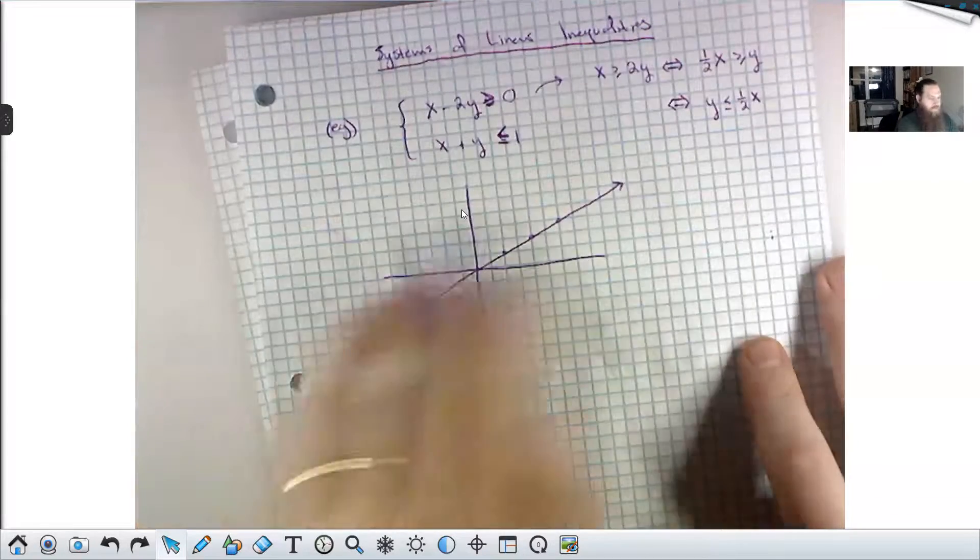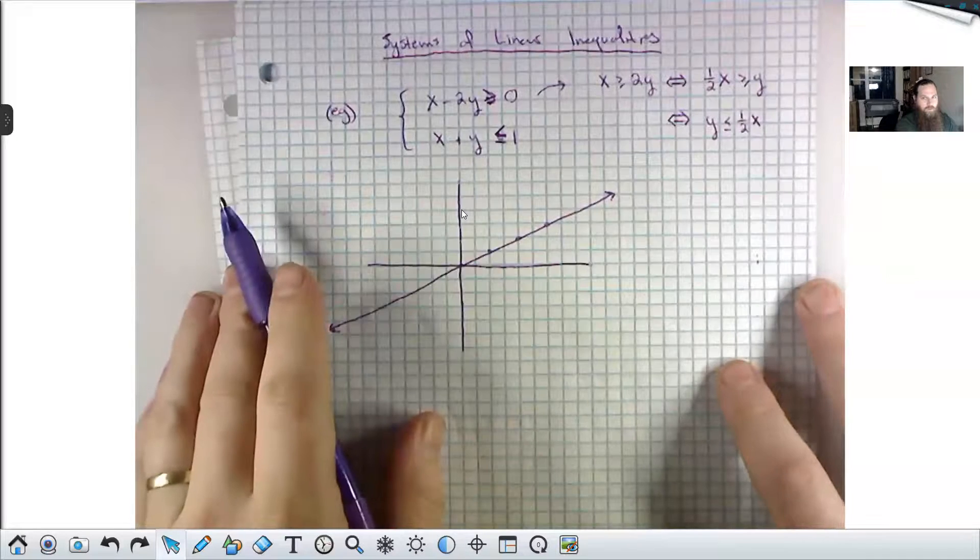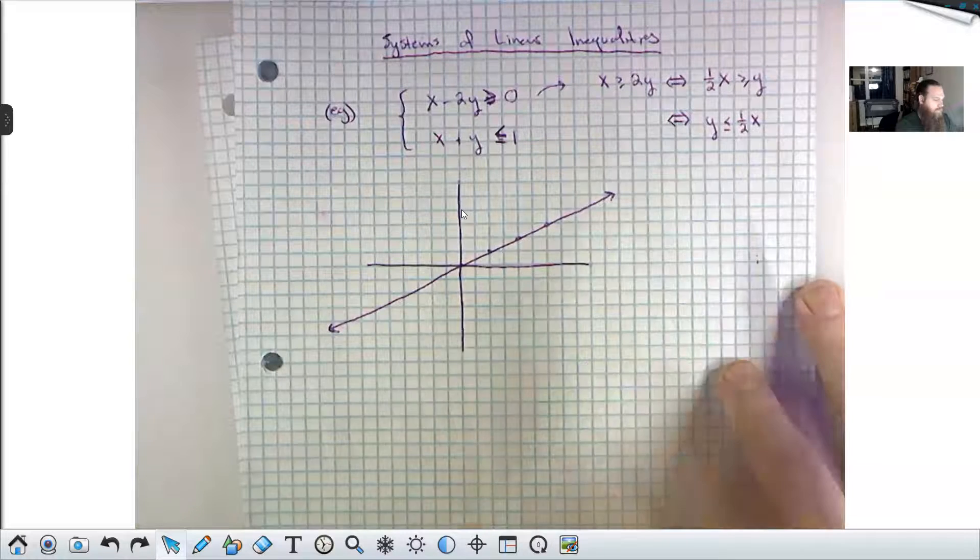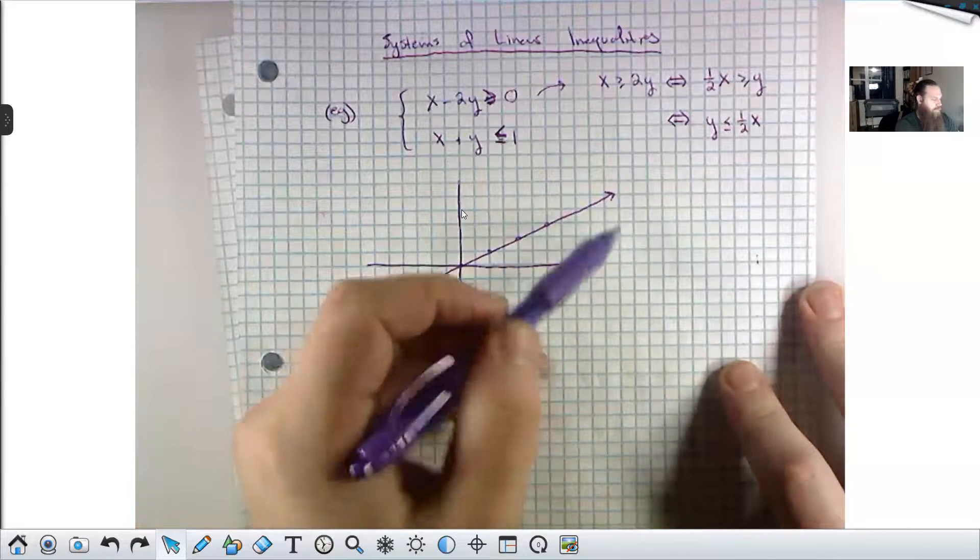So the solution set to this first inequality is all of the points whose y value is smaller than one-half x, less than or equal to. So that's like everything down here.